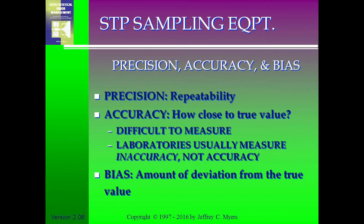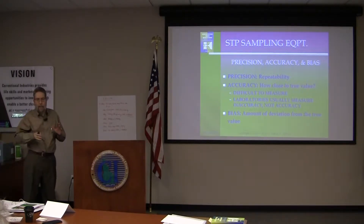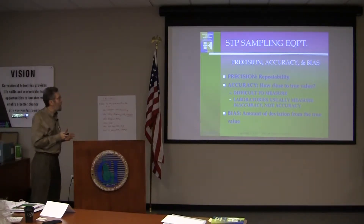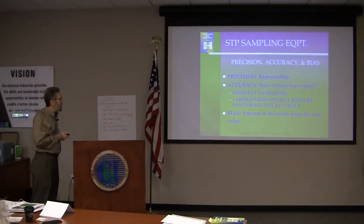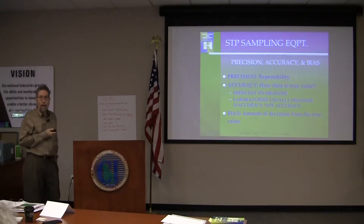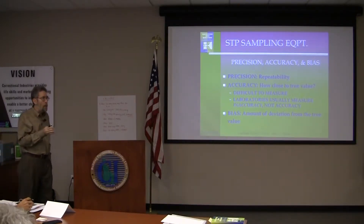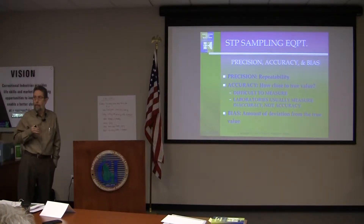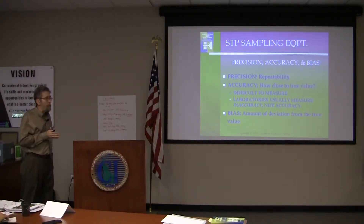Why are we concerned about correct versus incorrect sampling devices? It goes back to an issue associated more with laboratories: precision, accuracy, and bias. This rolls into statistics. We want to define those because precision and accuracy are sometimes confused. They're related but not the same thing. The simple way to think of it is precision is how much repeatability do you have — if you can measure a quantity over and over and get very close to the same answer, that's precision.